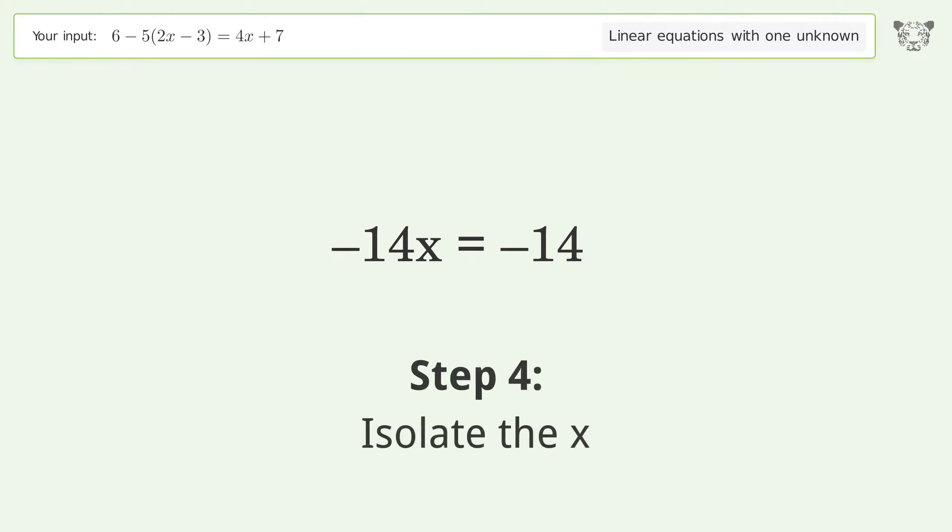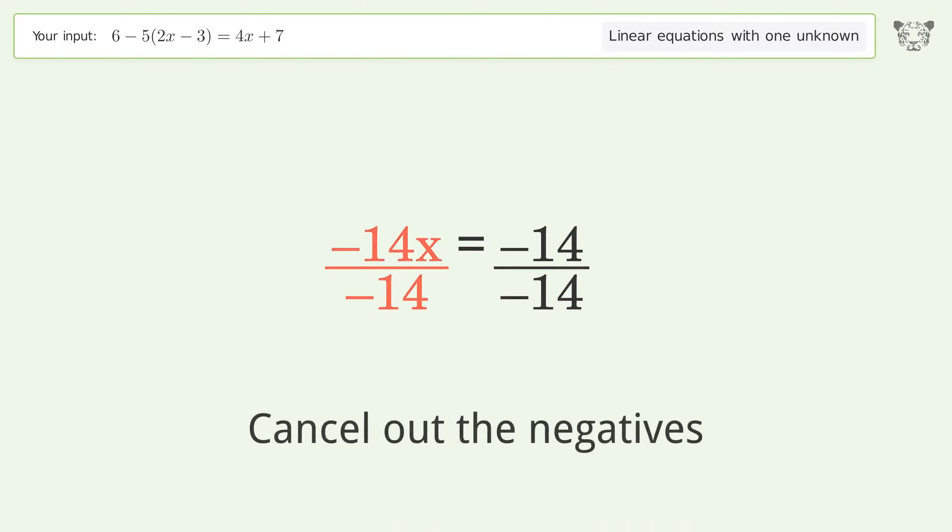Isolate the x. Divide both sides by negative 14. Cancel out the negatives.